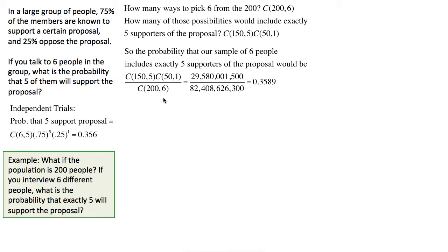The calculation we need is: the number of cases making up the event — five support and one opposes — divided by the total number of possible outcomes. We do the multiplication in the numerator, calculate the denominator — very big numbers — and it comes out to approximately 0.3589. And notice that's very, very close to the probability we got using the independent trials formula.